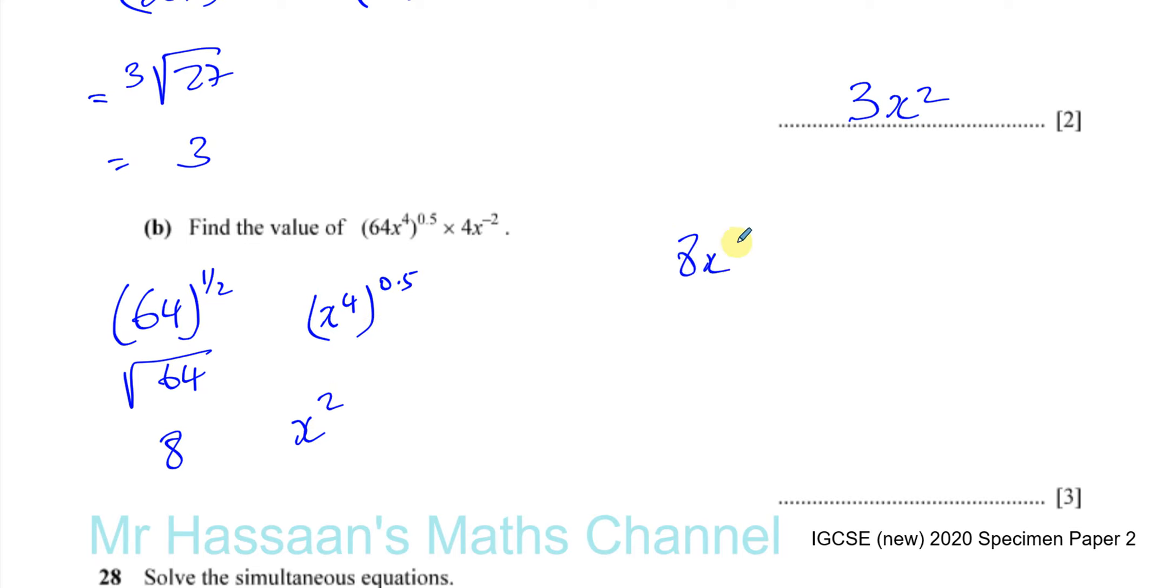And this is going to give you x to the power of 4 times a half is 2. So you have 8x squared times 4x to the power of minus 2. So you can say 8 times 4 is 32, and x to the power of 2 times x to the power of 2.